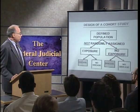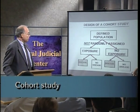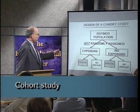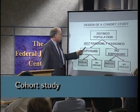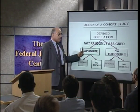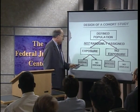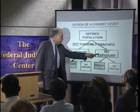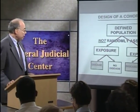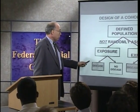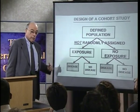If we are not able to randomly assign people, we have the following type of study called a cohort study. A defined population, not randomly assigned, but self-selects or is assigned by other people to exposure or non-exposure. People, for example, may work in a certain industrial plant, while others seek jobs in another plant. We then follow up people who have the exposure and people who don't have the exposure and look at the rate of disease in both groups. If the exposure is related to disease, we would expect to see a greater number of people with disease in the exposed group than in the non-exposed group.